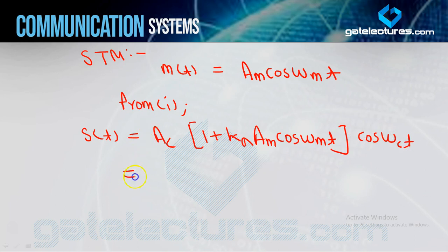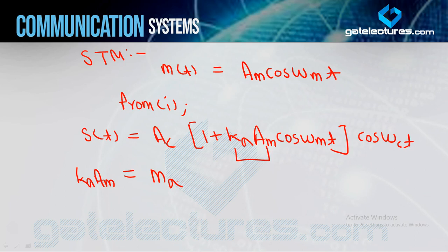Examining this equation, the term kA × AM: kA has unit 1/volt and AM has unit volt, so their product is dimensionless. We give this term a special name: modulation index, also called depth of modulation or percentage modulation. It tells you what percentage of modulation has been achieved. Many numericals are asked from this concept.